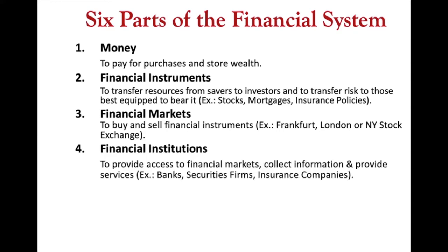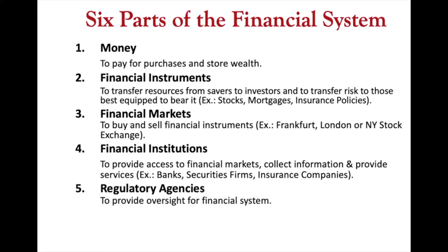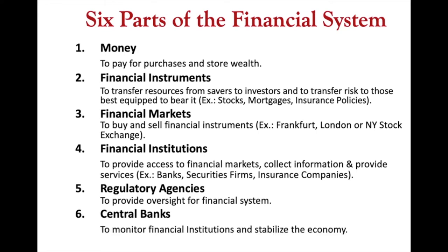Then we have financial institutions — examples include security firms, banks, and insurance companies. We also have regulatory agencies, which are government agencies that supervise the financial systems and try to keep them stable. Last but not least, we have the central banks, which are supposed to operate independently and whose job is also to stabilize the economy.